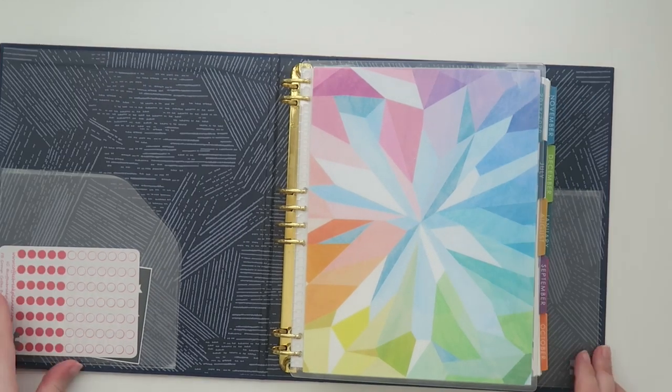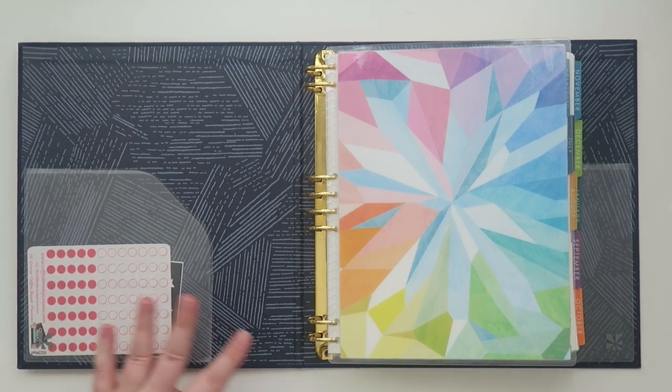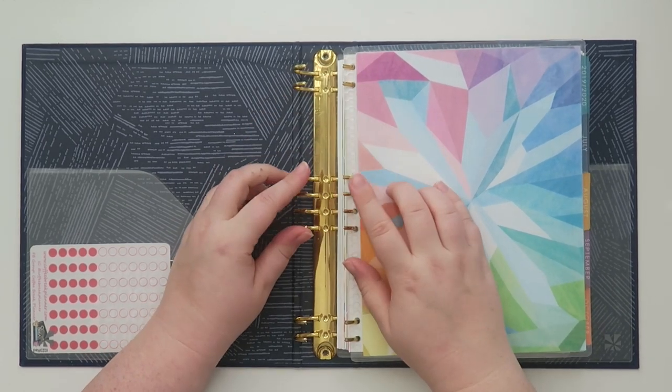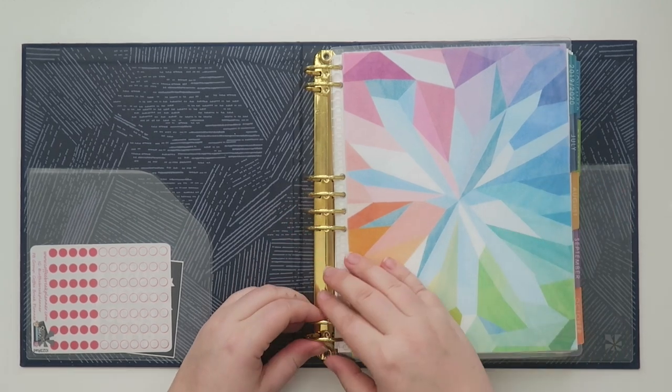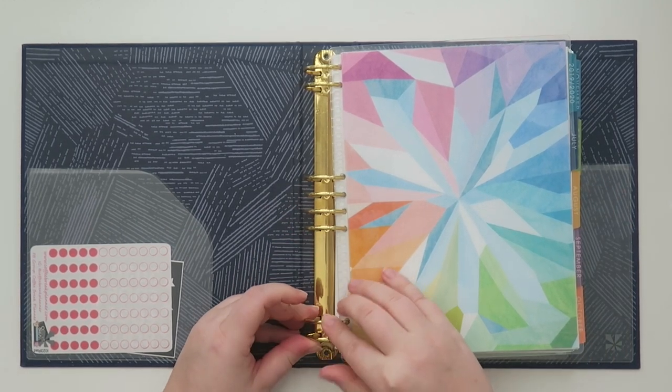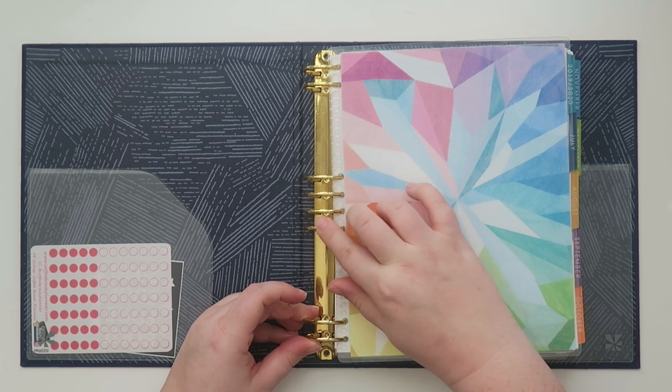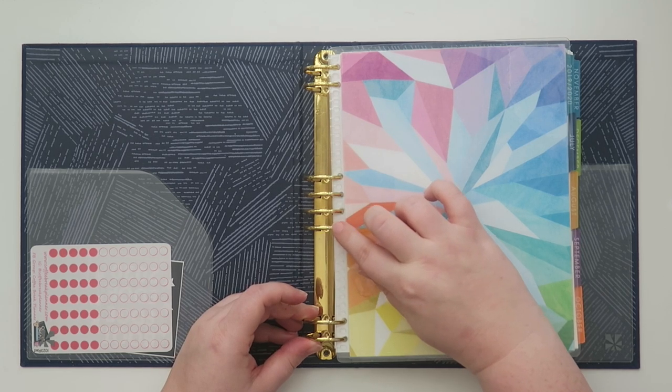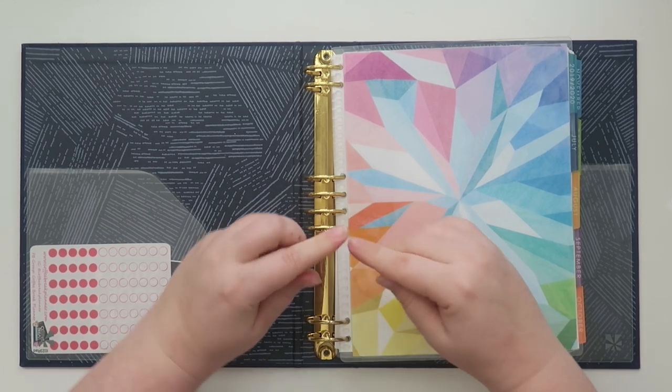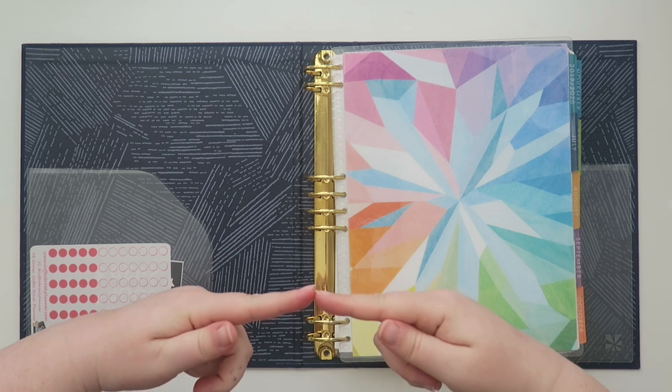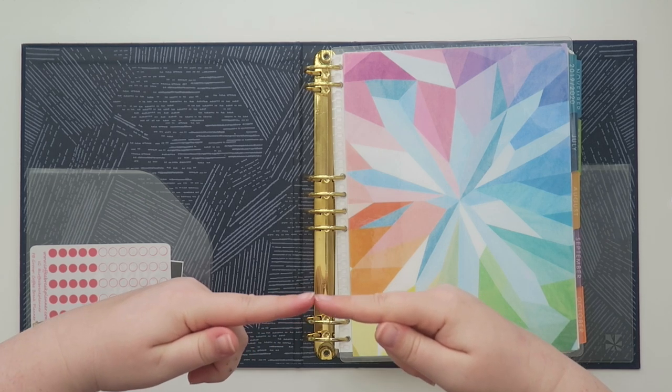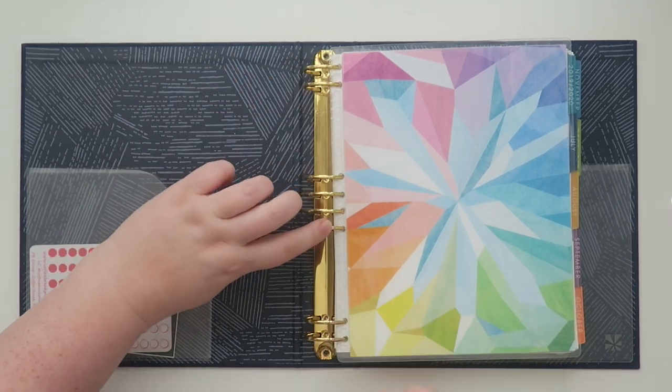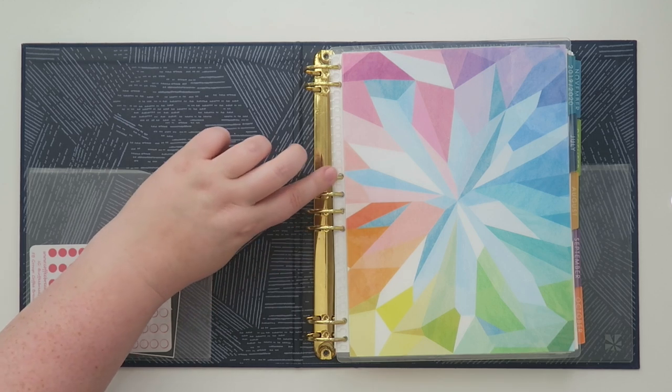So when you open it up, something that bothers me about this one is that these rings never really, it was very easy for these to like skip and you'll notice I'm gonna flip through a few of these pages. Some of these rings are super flat but like this one right here like the pages get stuck because they don't line up nicely. Like they just don't line up nice and these ones are pretty good but there's like this one's really bad.